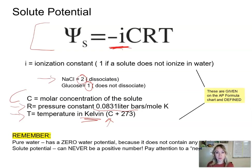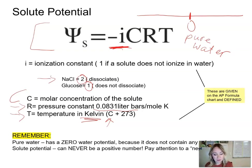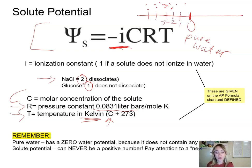Why is solute potential always negative? Because we established that pure water has a water potential of zero — that is the highest level it can be. When we add solutes into the water, those numbers become negative: minus one, minus two, minus three. So adding solutes makes the number smaller than zero, meaning solute potential lowers pure water potential.